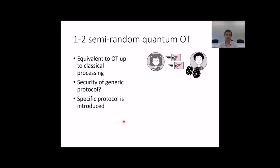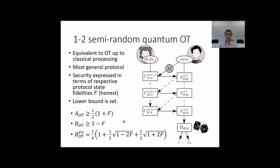This variant is equivalent to non-random OT. It only requires classical communication to implement OT with semi-random OT. There is a proof in our paper on archive. We use the following generic protocol to study the security. It is the most general protocol for OT. It is inspired by Kitaev's coin-flipping protocol.